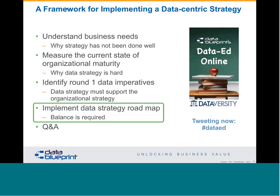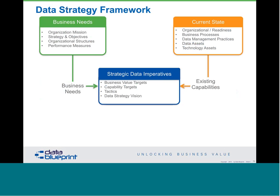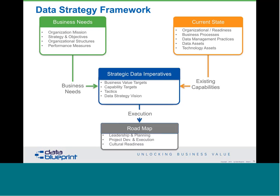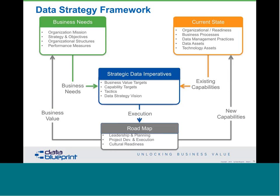Let's get into our last section — implementing the data strategy roadmap. We've gotten to business needs and current state, which gives us combined the ability to create strategic data imperatives. And now through execution of those imperatives, we come up with a roadmap. The roadmap is a really key part of this because it's your articulation of what's going to happen. It's got to be a balanced approach. If you deliver no business value, you will not be able to sustain your effort. On the other hand, if you focus all of your efforts on infrastructure capabilities, you similarly cannot derive the business value you need. It's very much of an art — a balance between business value delivered and new capabilities delivered to the organization.